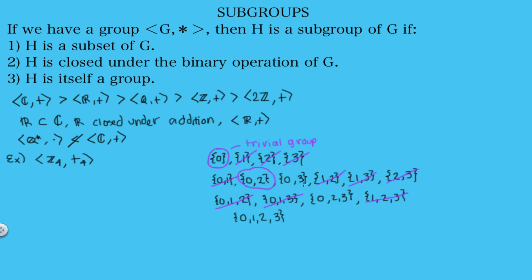The set {0, 3} fails because 3+3=6≡2 mod 4, and 2 is not in the set — so it's not closed. The set {0, 2, 3} also fails because 2+3=5≡1 mod 4, and 1 is not in the set. Finally, the full set {0,1,2,3} is just our original group, so it is of course a subgroup — called the improper group. Every group has at least two subgroups: the trivial group containing only the identity, and the improper group which is the group itself.